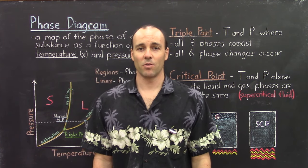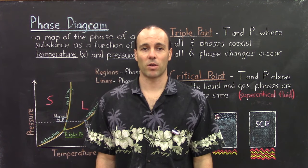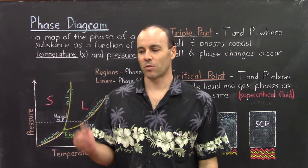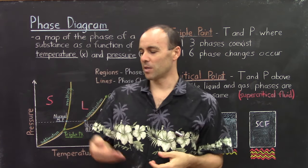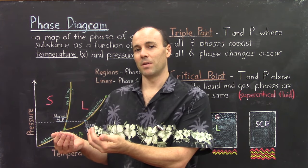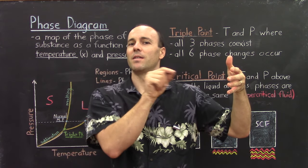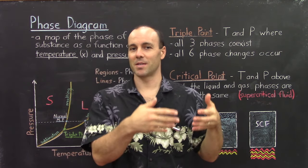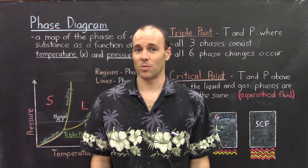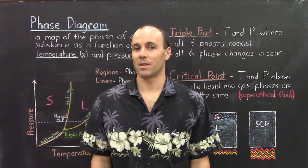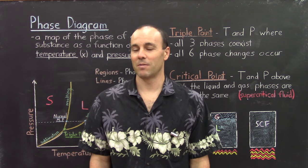A phase diagram is basically a graph that tells you what phase you should find a substance in under different conditions. In chemistry, the conditions we're interested in are normally temperature and pressure. So if you have a certain temperature and pressure and want to know what phase a substance is in, you look at the phase diagram. For instance, at 50 degrees Celsius and one atmosphere pressure, water is a liquid, but carbon dioxide is a gas. Every substance is different and therefore has a different phase diagram. But if we study one phase diagram of a generic substance, we learn something about all substances.